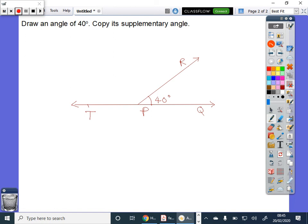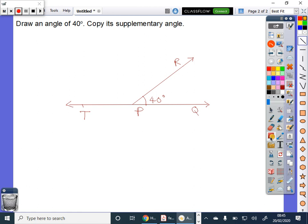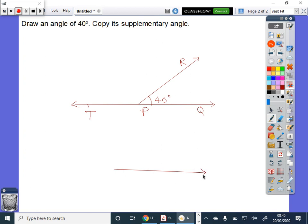The same way what we did. First, draw a line. Let the line be AB. Now, with the compasses, with the center P, any radius...